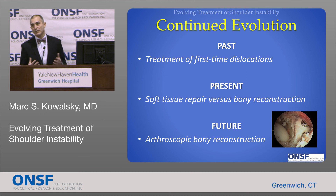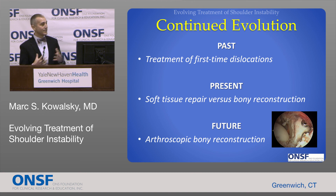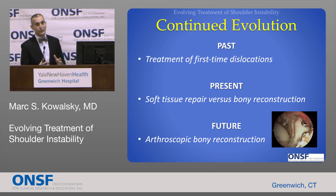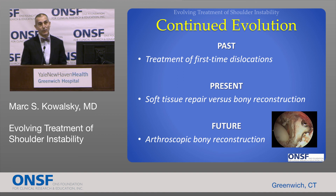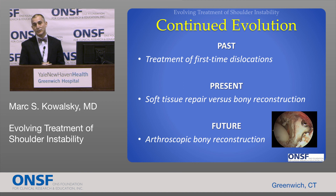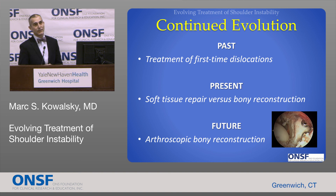Our treatment of shoulder instability continues to evolve. Past controversies continue to percolate — we still debate how to treat first-time dislocators. Present controversies are still relevant — we continue to debate who's a candidate for bone versus soft tissue repair, as seen from the off-track concept and subcritical bone loss. And the future is at our doorstep: we're perfecting techniques to do bony reconstruction with the arthroscopic approach, which at some point will become the standard of care.